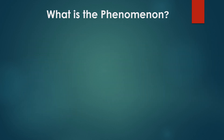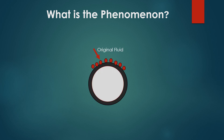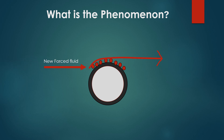So how does this phenomenon occur? If an object's surface is in an unaltered state, there is already a fluid on it, whether it is a gas or a liquid. However, when a forced fluid reaches the object's surface, there is a friction force between the original fluid and this new fluid.